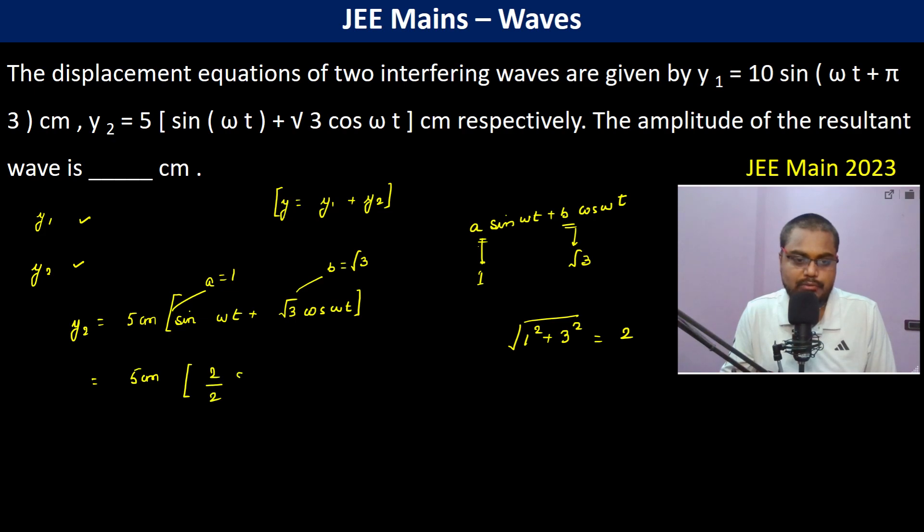So 2/2 sin ωt plus (2√3)/2 into cos ωt. Now we can clearly see here the 2 can be taken outside, so this is 10 centimeter sin ωt times 1/2 plus cos ωt times √3/2.